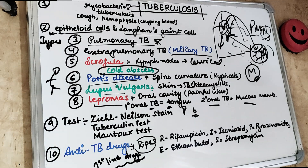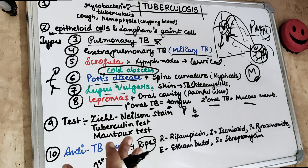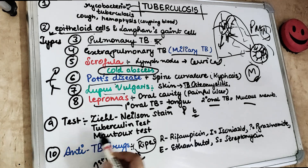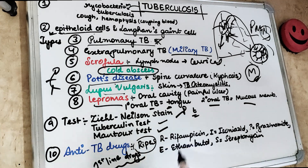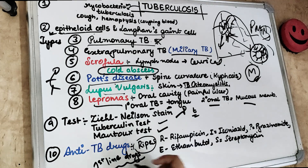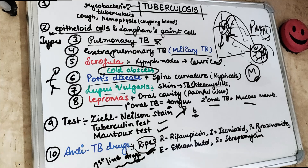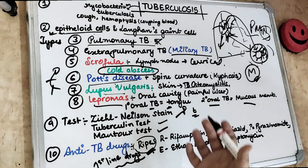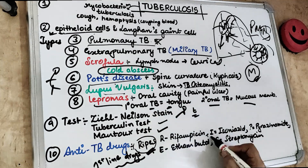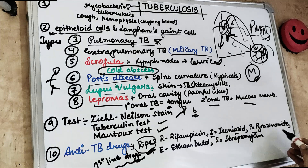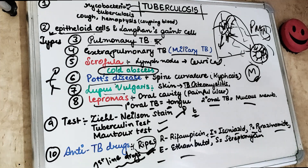The tests for TB include the Ziehl-Neelsen test, where we stain the tubercle bacilli in a smear, the tuberculin test, and the Mantoux test. The first-line drugs use the mnemonic RIPES: R for rifampicin, I for isoniazid, P for pyrazinamide, E for ethambutol, and S for streptomycin.